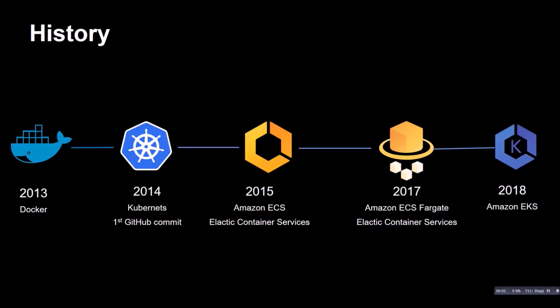Hello AWS friends. In this tutorial, let's have a look at AWS Fargate. I have already some videos on my YouTube channel about ECS — one explaining ECS, another explaining a CodePipeline for ECS. I also have videos about Kubernetes with kops and a video on EKS, but not so far on Fargate. Fargate was launched in late 2017 as the next evolution step to ECS.